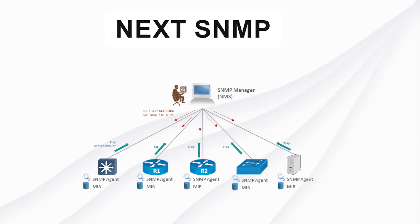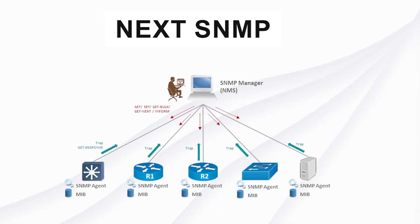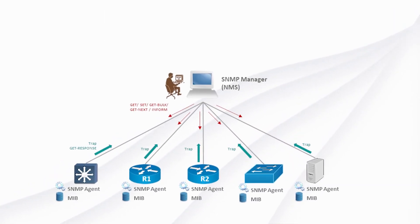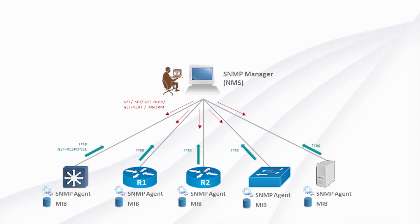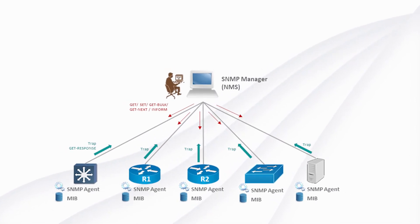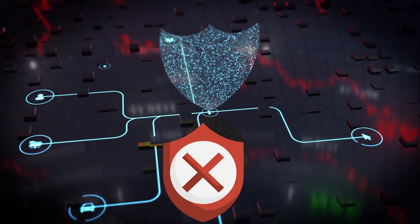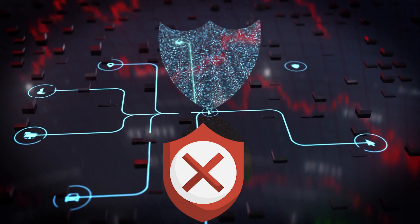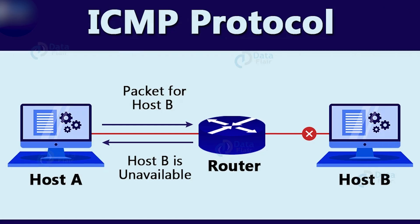Next, we have SNMP — the protocol that's always whispering about what's going on in your network. It's like a nosy neighbor telling you who's home, who's not, and which appliances are acting up. But leave it unsecured and anyone can listen in, or worse, start making changes to your network.